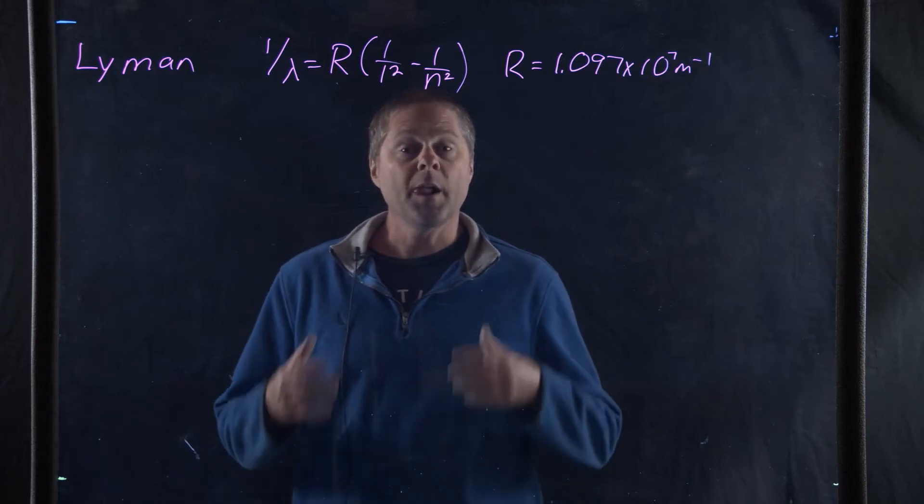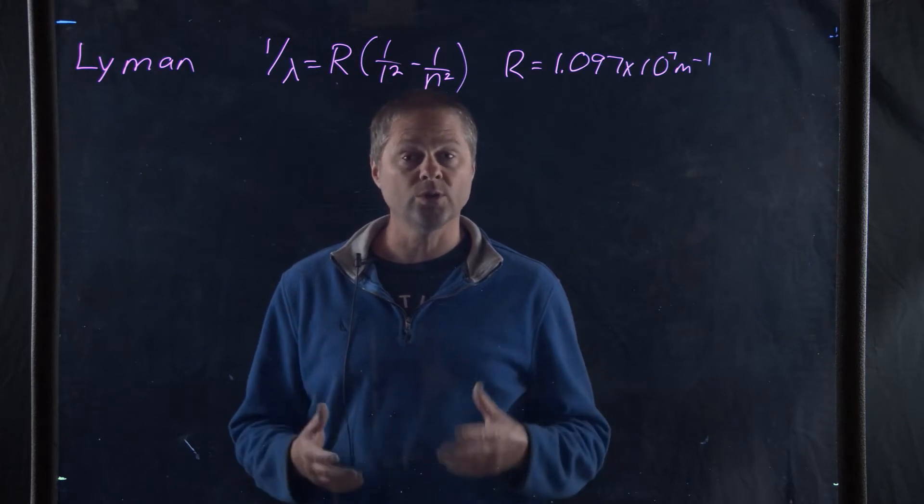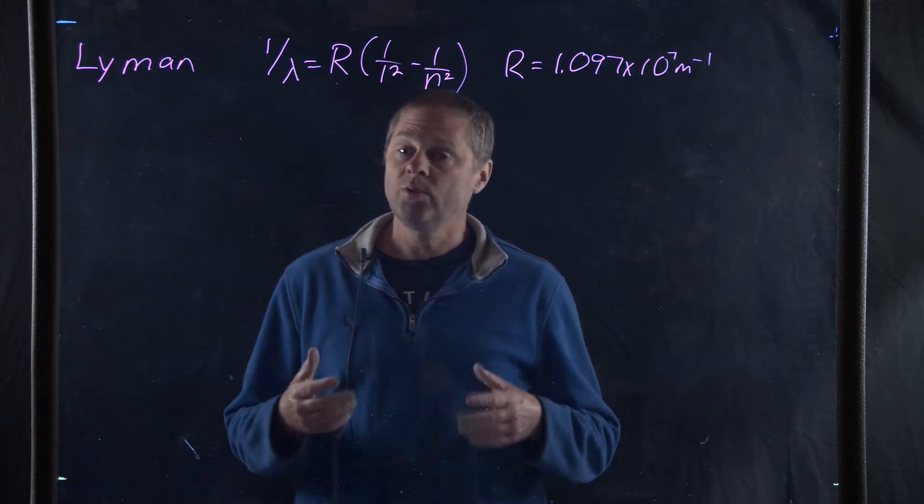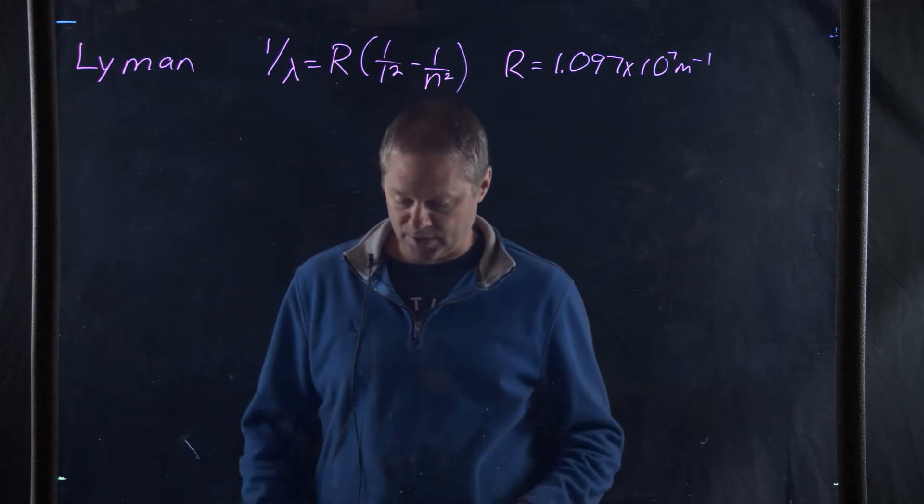We continue our discussion on the hydrogen emission spectrum. So we looked at the Balmer series, which shows us visible light. We just got done with the Paschen series, which shows us infrared light. Now we're going to look at the Lyman series.